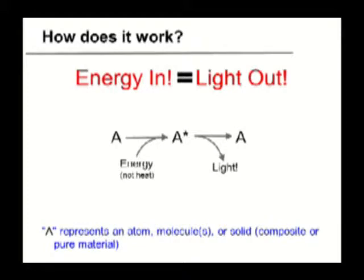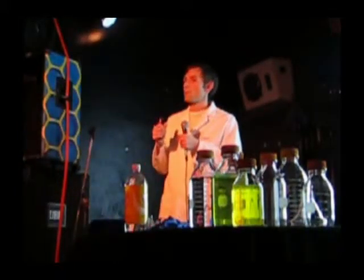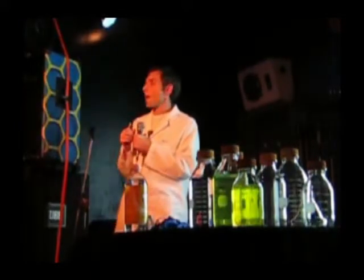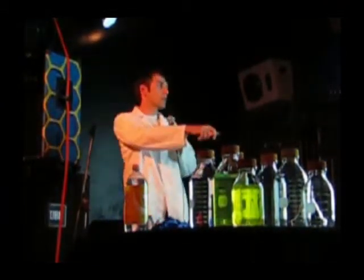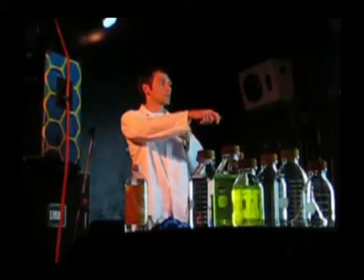You start off with some compound — A can represent an atom, a big solid, or an LED light bulb. You give energy to it and it goes into this excited state with that extra bit of energy in its electronic state. This electron is now further away from its positive charge. Since positive and negative attract, it finds a way to give that energy back, pulling the negative charge toward the positive charge and ejecting a photon of light.